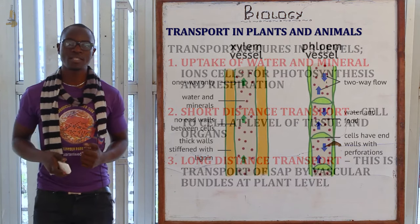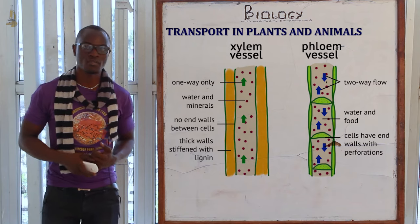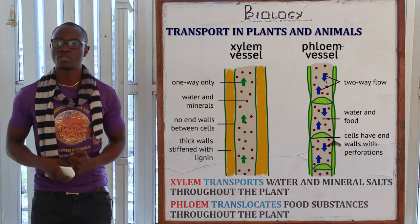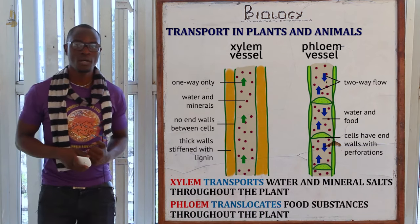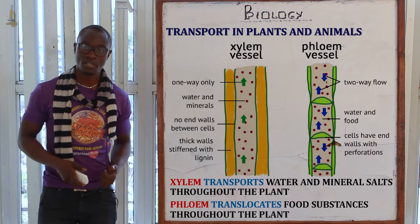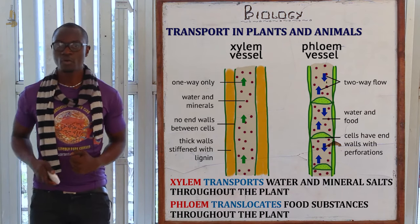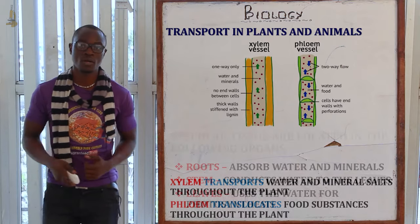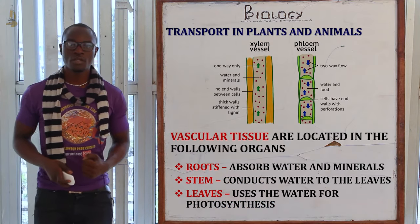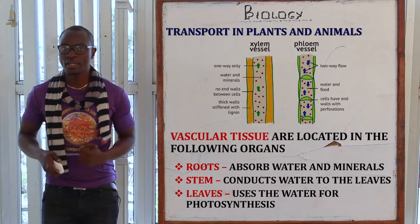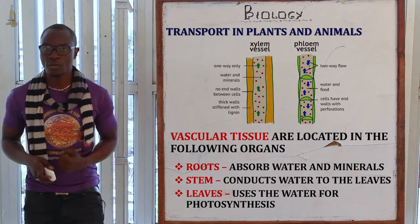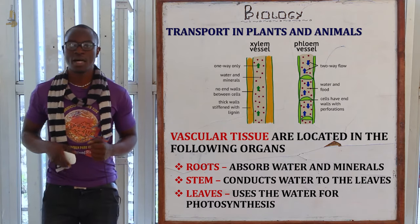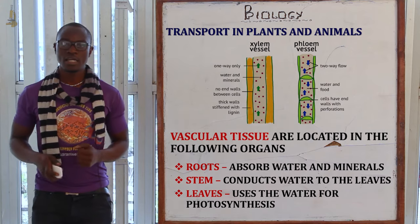The transport system in plants consists of vascular bundles comprising the xylem, which conducts water and mineral salts throughout the plant, and the phloem, which conducts food substances throughout the plant. The vascular tissue is mainly located in the following organs: the root, the stem, and the leaf.